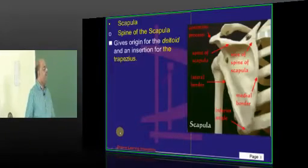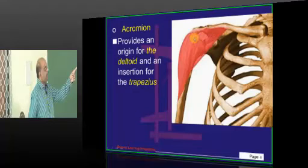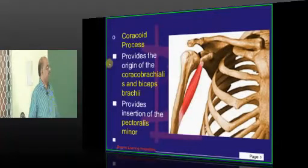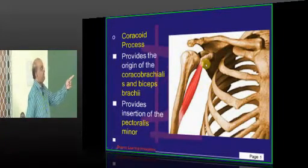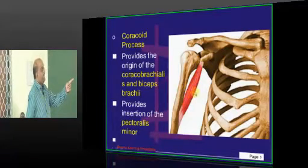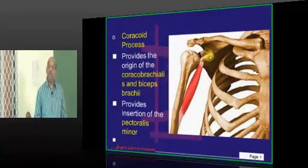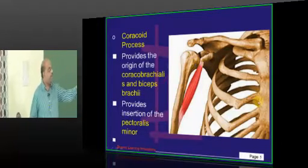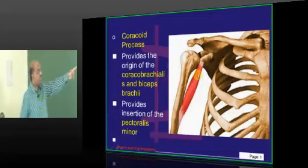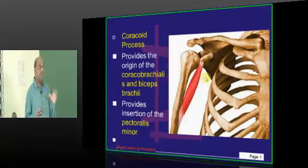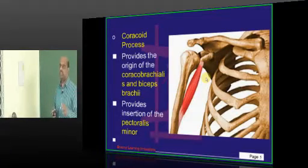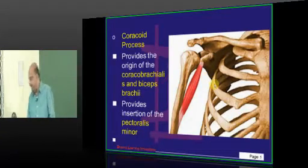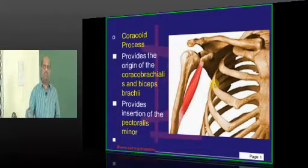Then we have an acromion, which is important because it provides the origin for the deltoid and also the insertion for the trapezius. Then we have one coracoid process. The biceps brachii and the coracobrachialis both take their origin from the coracoid process. The pectoralis minor also has an insertion on the coracoid. The origin and insertions of muscles associated with the coracoid is one of the commonly asked questions you need to be very sure about.